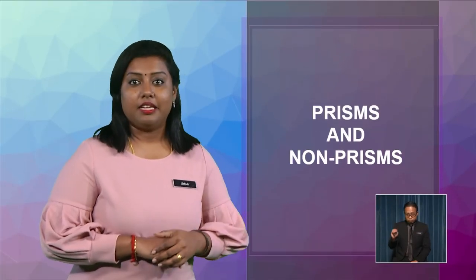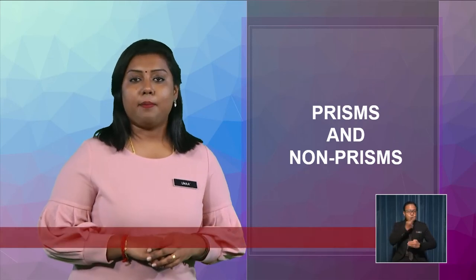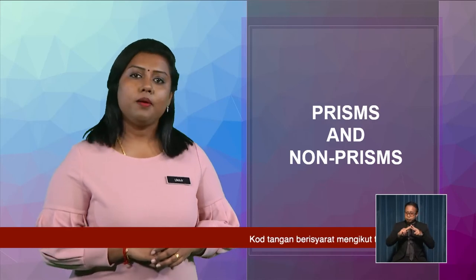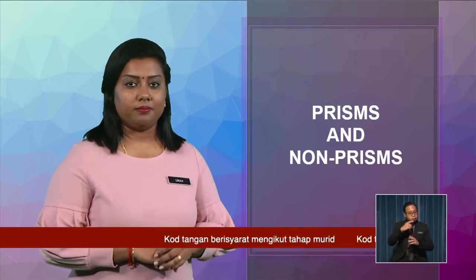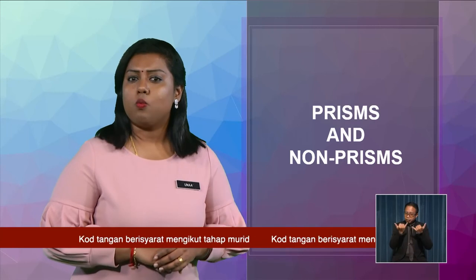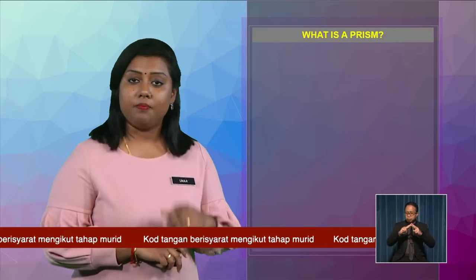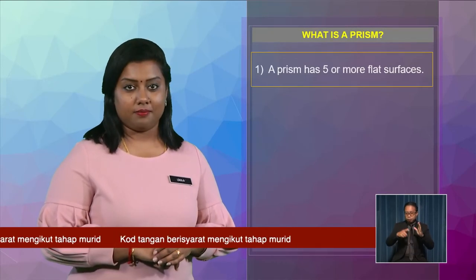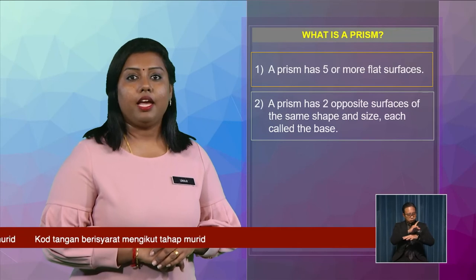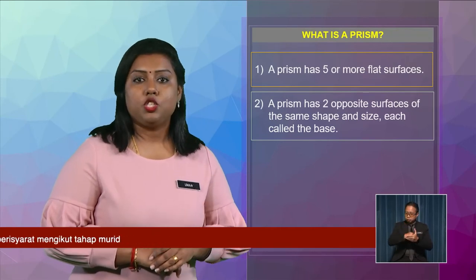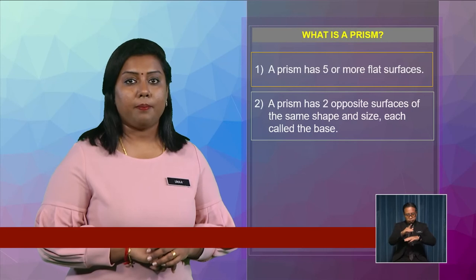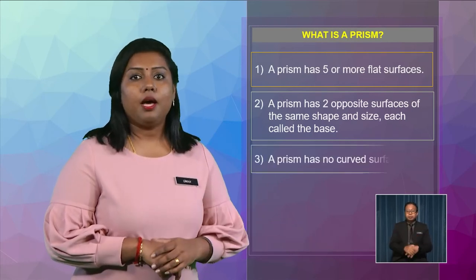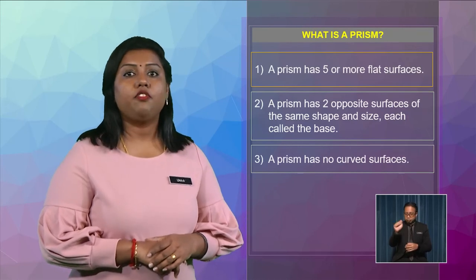Now, Pupils, we will learn about prisms and non-prisms. What is a prism? Firstly, a prism has five or more flat surfaces. Secondly, a prism has two opposite surfaces of the same shape and size, each called the base. Thirdly, a prism has no curved surfaces.